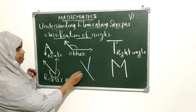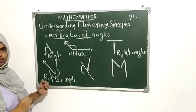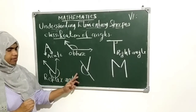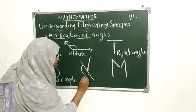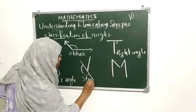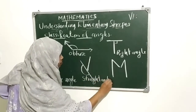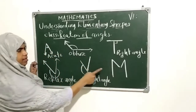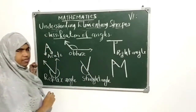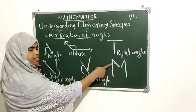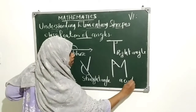Then, here — what is this angle? This is a straight angle, called a straight angle. And here this angle formed is also an acute angle.